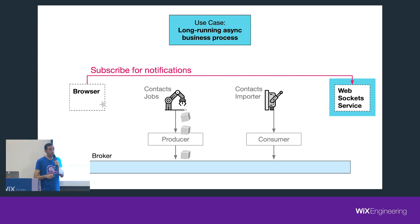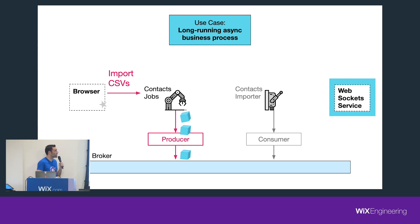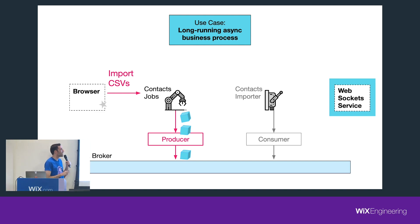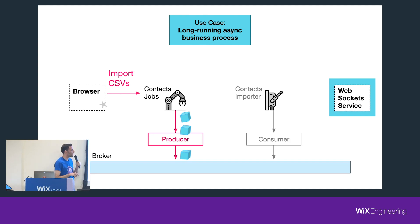The first thing that will happen is the browser will subscribe for notifications from the WebSocket service on a dedicated channel ID. Then all you have to do is get the browser to request importing of CSVs, or import from Google — all kinds of scenarios for the contacts job service, which produces the messages to Kafka.